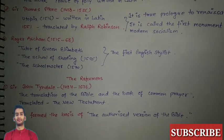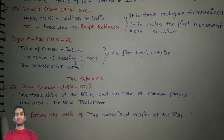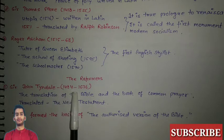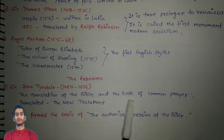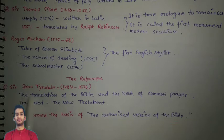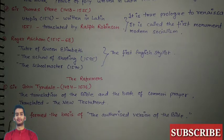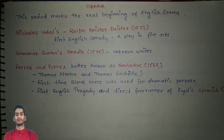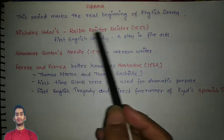These writers are also called the Reformers. First is William Tyndale (1484–1536). He translated the New Testament, and his translation of the Bible along with the Book of Common Prayer formed the basis of the Authorized Version of the Bible.